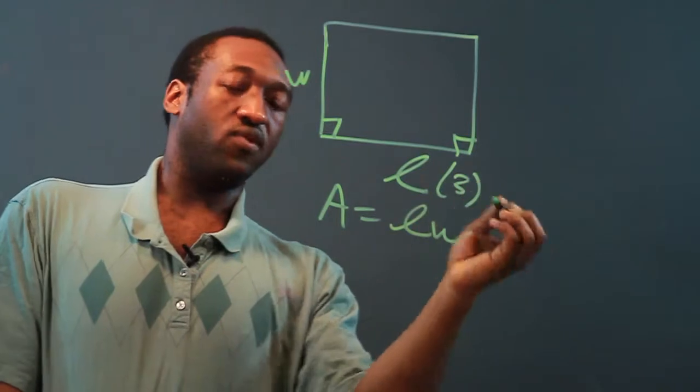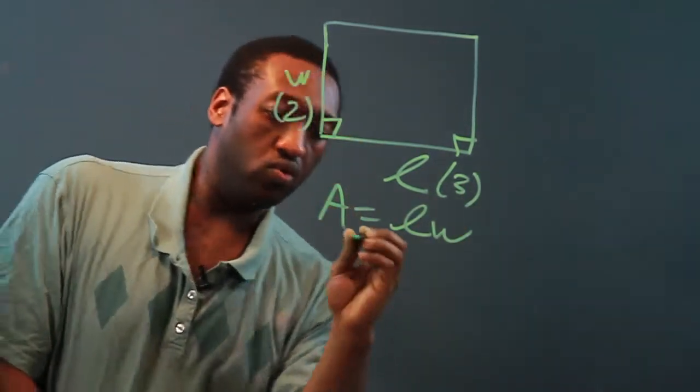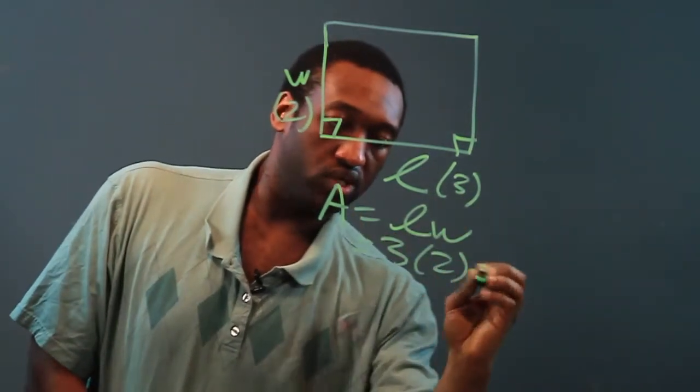For example, if we had a 3 for a length and a width of 2, we would get 3 times 2, which is 6.